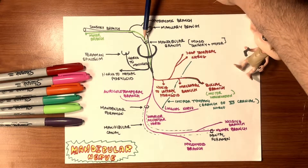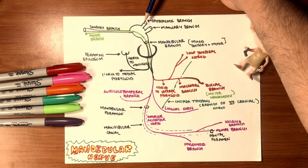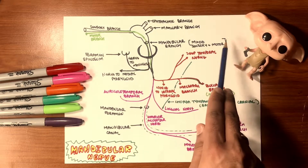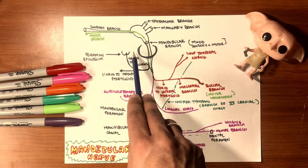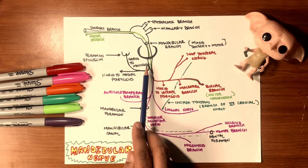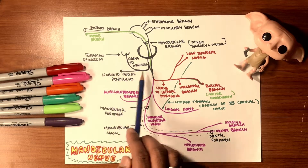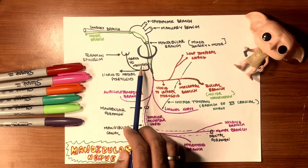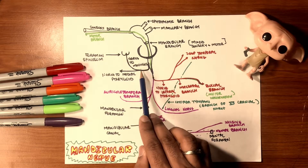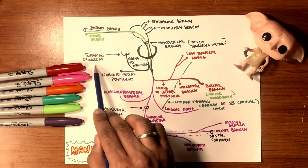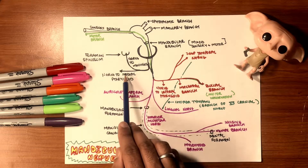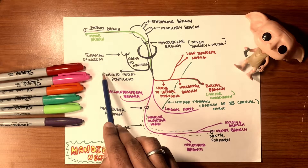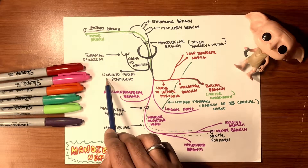The mandibular nerve enters through foramen ovale and immediately gives off two branches from the main trunk. The first is the nerve to the meninges, which supplies the meninges and skull — it re-enters the skull through foramen spinosum, located right behind the oval foramen. The second is the nerve to the medial pterygoid, which further branches to supply tensor palatini and tensor tympani.